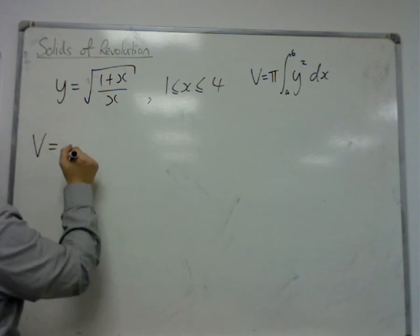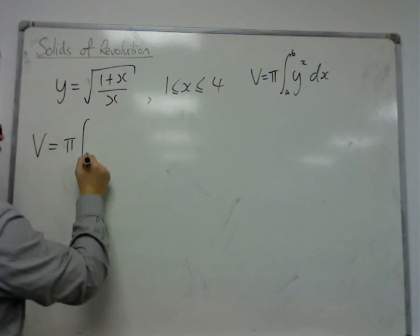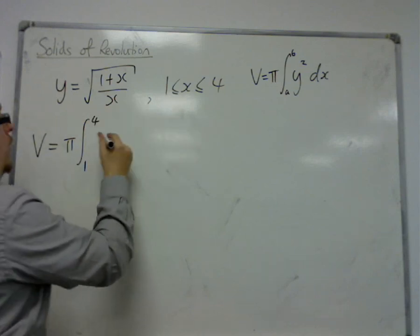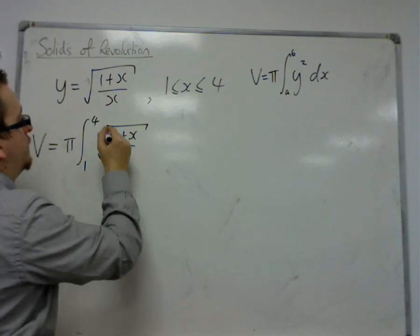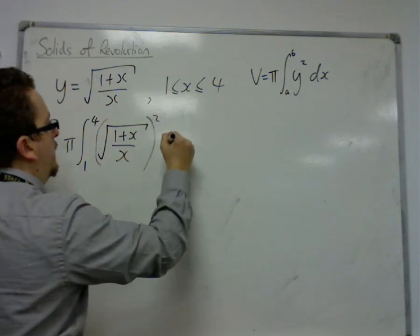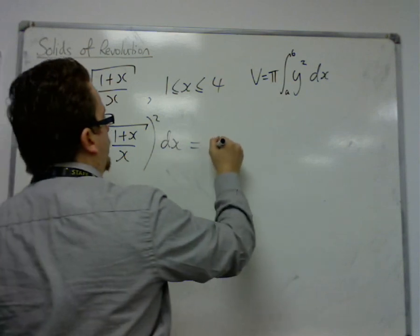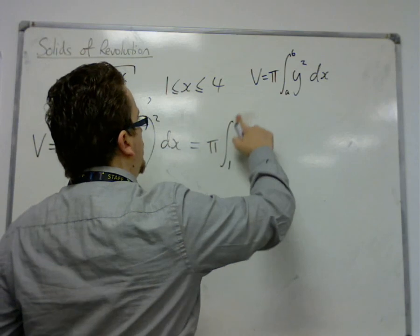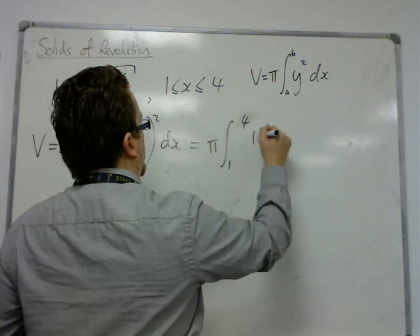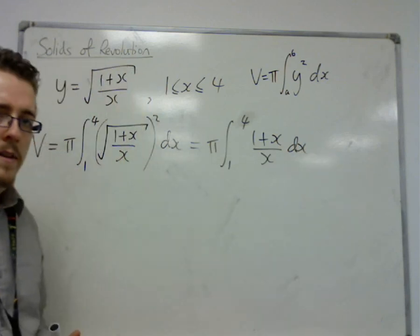So, the volume is equal to π times the integral between 1 and 4 of the square root of (1 + x) over x. That's y. And squared will get rid of the square root sign.